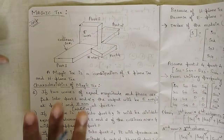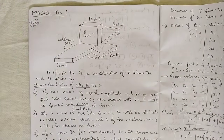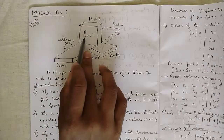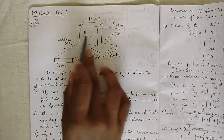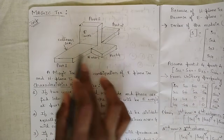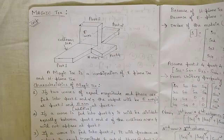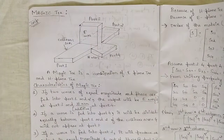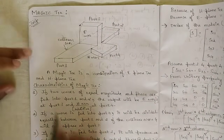In E-plane T and H-plane T there were two arms, but here there are two extra arms: one is the E-arm for E-plane T, one is the H-arm for H-plane T, and the collinear arm present between port 1 and port 2. Note down this figure.